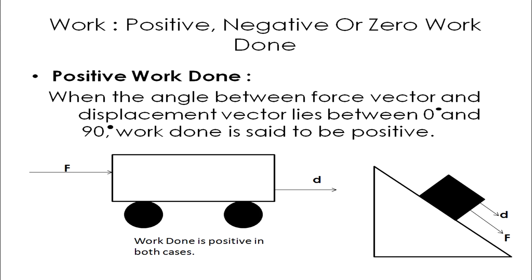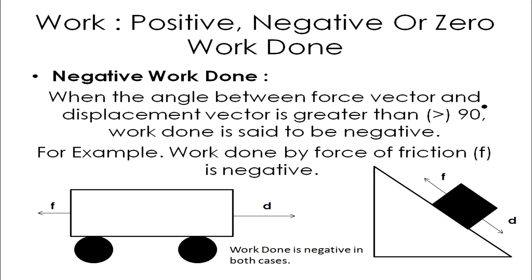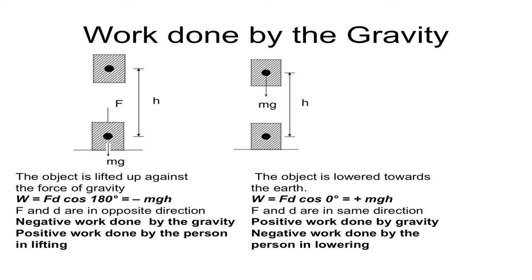Let's talk about positive work done. When the angle between the force vector F and the displacement vector D lies between 0 and 90 degrees, then the work done is said to be positive. As can be seen in the figure, the force and the displacement are both in the same direction, so work done is positive. For negative work done, when the angle between the force vector and the displacement vector is greater than 90 degrees, the work done is negative. The force applied and the displacement are in opposite directions. The perfect example is the work done by friction, which is always negative.